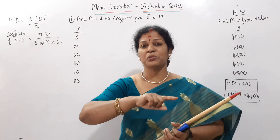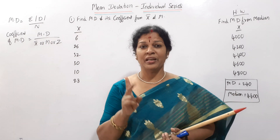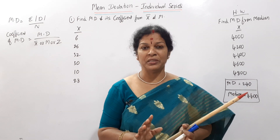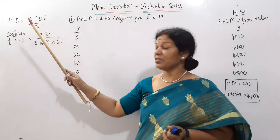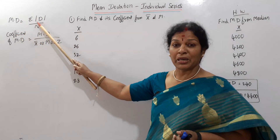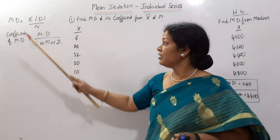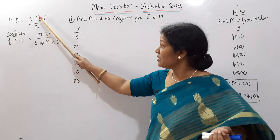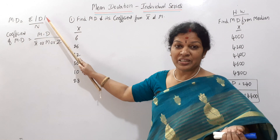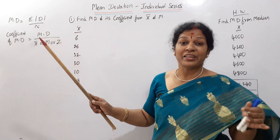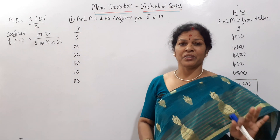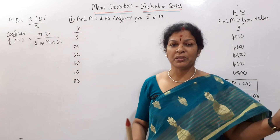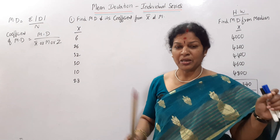Mean deviation — taking deviations from mean. However, from median and from mode also we can take the deviations. Today we will see individual series. What is the formula for individual series? Mean deviation, MD, is equal to σ|D| by N. Sigma means total. Mod D means deviations. These two vertical lines we call mod. Mod means we are ignoring the signs — whether positive or negative. So everything is positive. That is why we say it as σ|D| by N. Simple and easy to remember.